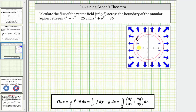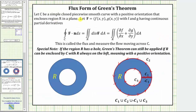At first, because the region has a hole, it may appear as if we cannot apply Green's Theorem to determine the flux. Let's go back and look at the conditions of Green's Theorem. C must be a simple closed, piecewise smooth curve with a positive — often referred to as counterclockwise — orientation that encloses the region R in a plane. This may seem like it's an issue when we have a hole.